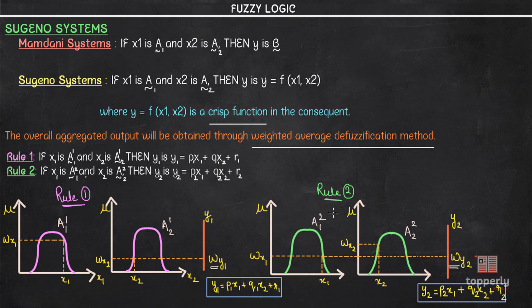Similarly for Rule 2, we find the corresponding membership values of x1 and x2 — wx1 and wx2 respectively. Then we again take the minimum of wx1 and wx2, since Rule 2 is also connected by the AND operator. The minimum yields wx1, and therefore this becomes the corresponding membership value wy2 for y2, where y2 = p2·x1 + q2·x2 + r2.